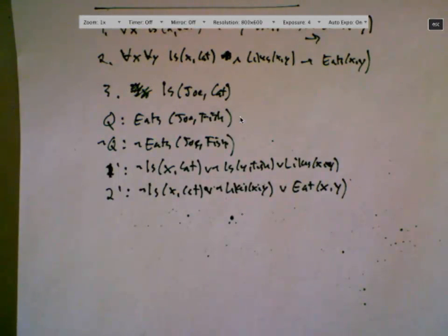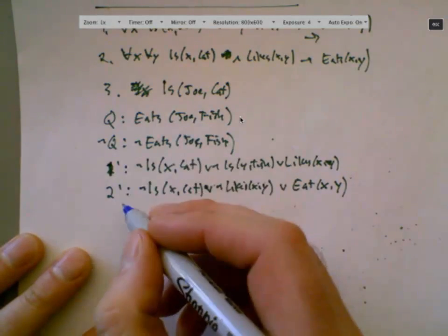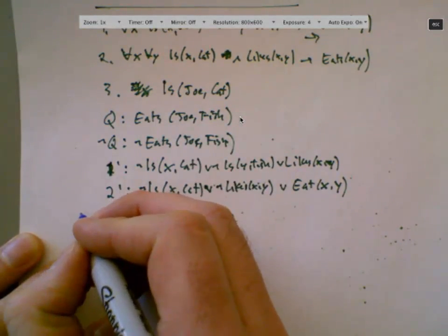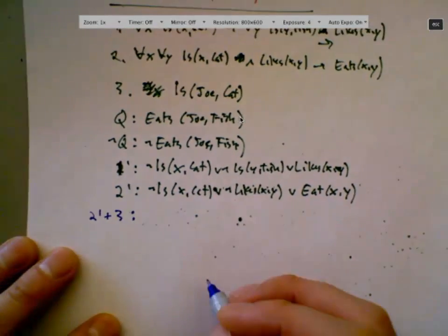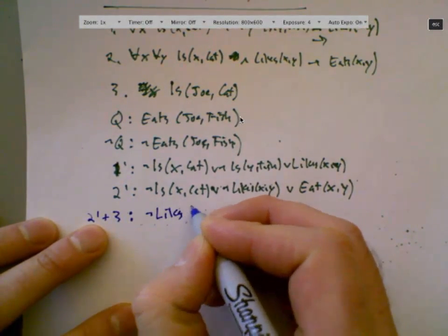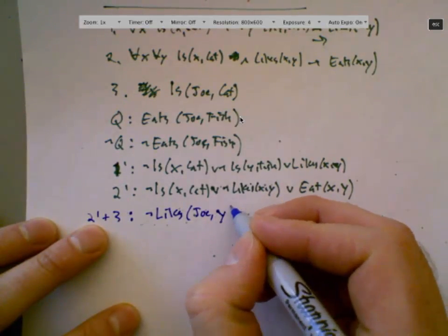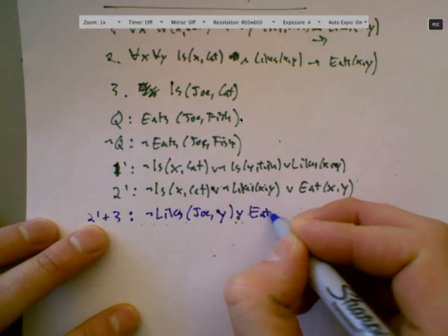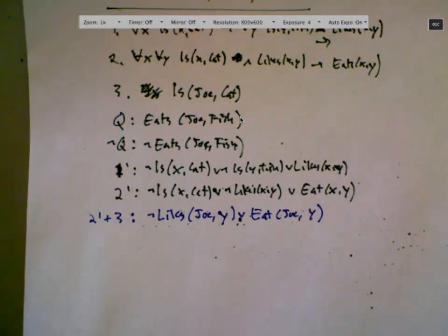And you might have to do multiple replacements at the same time. So when we take three and two prime, two prime plus three is going to give us not likes joe, y, or eat joe, y. Everybody get that?